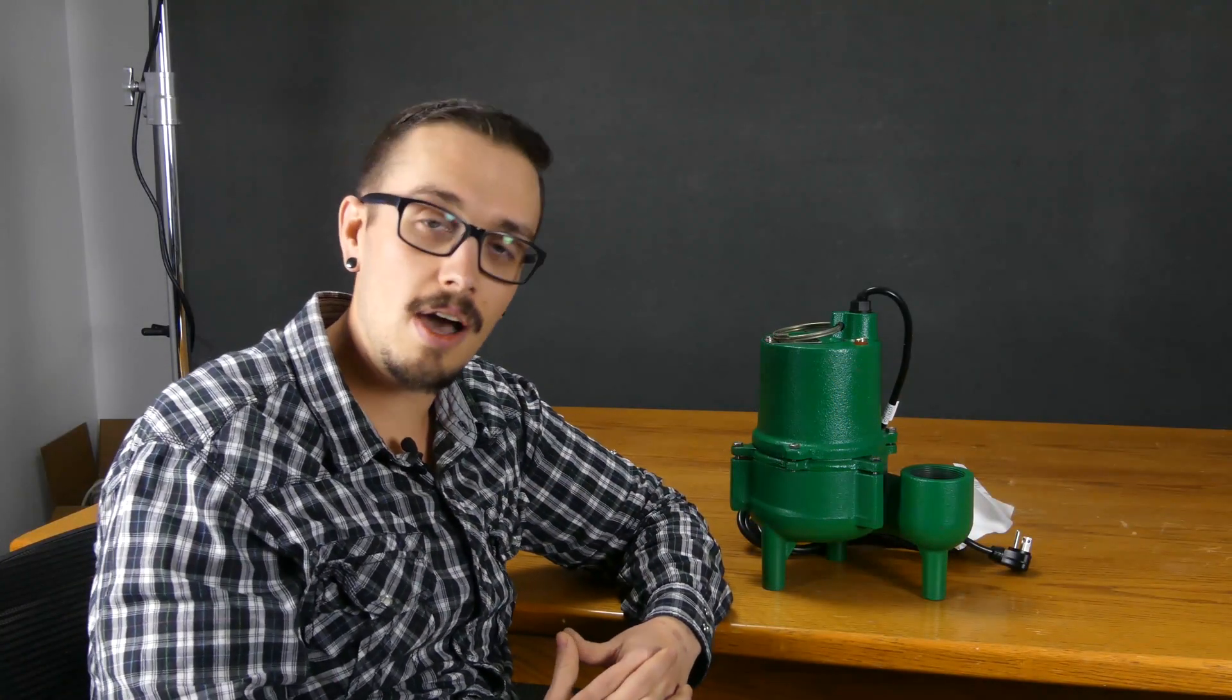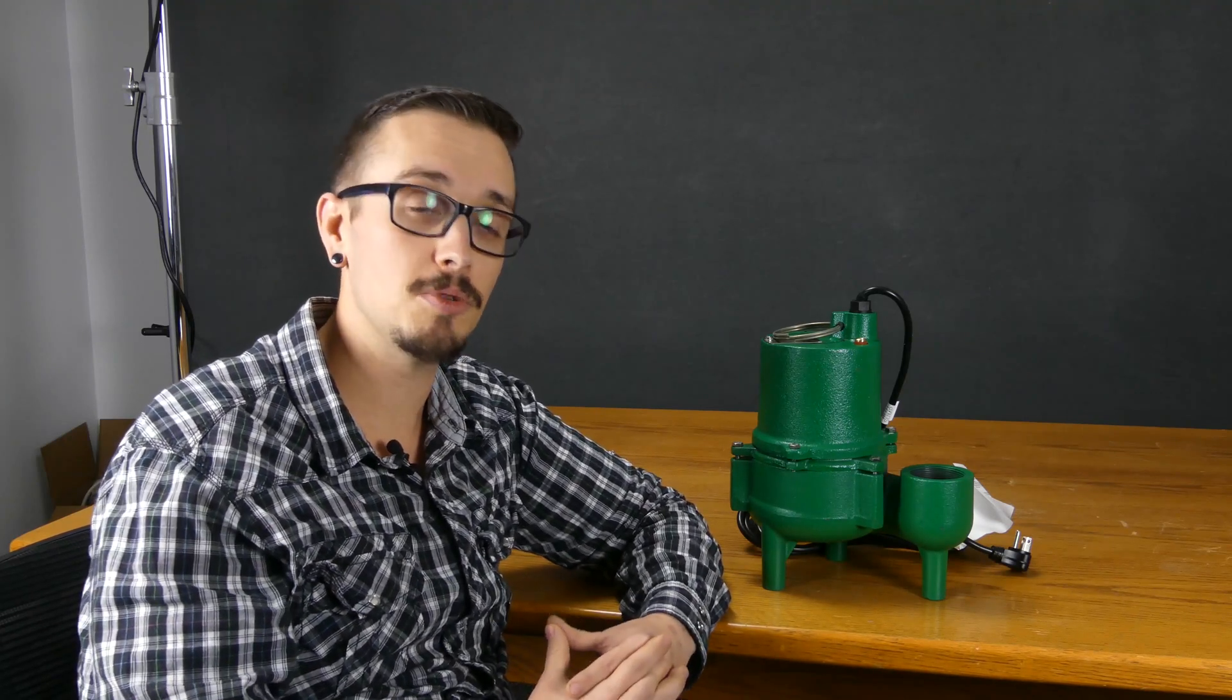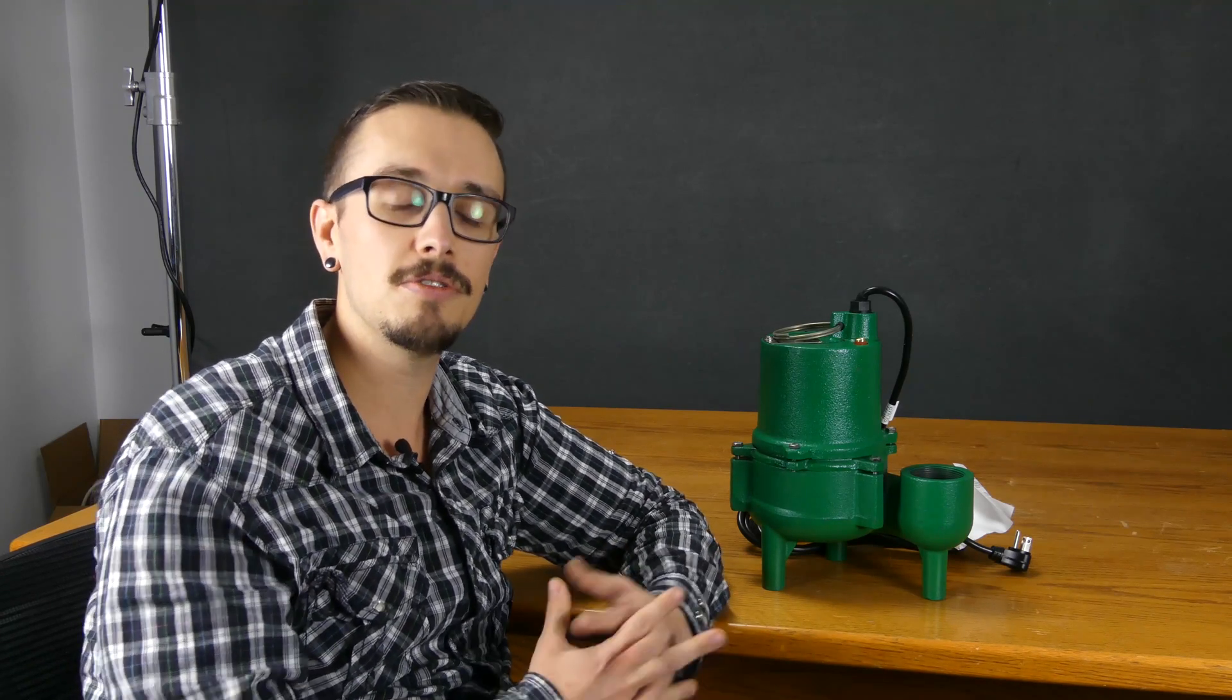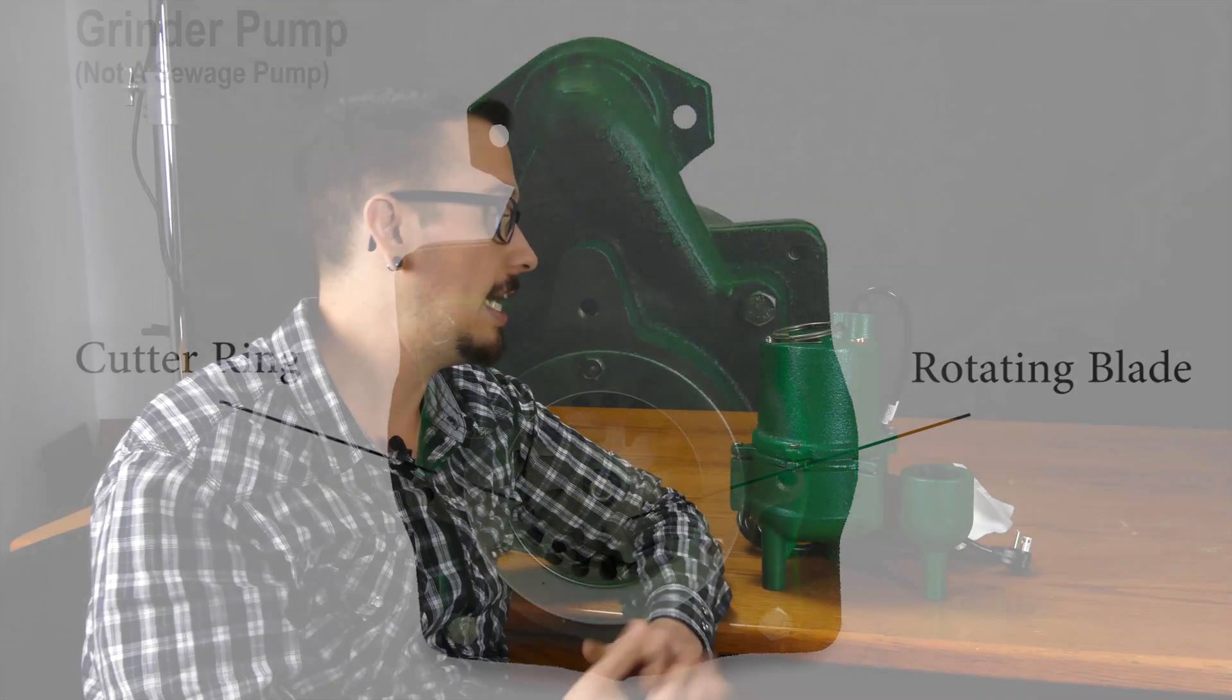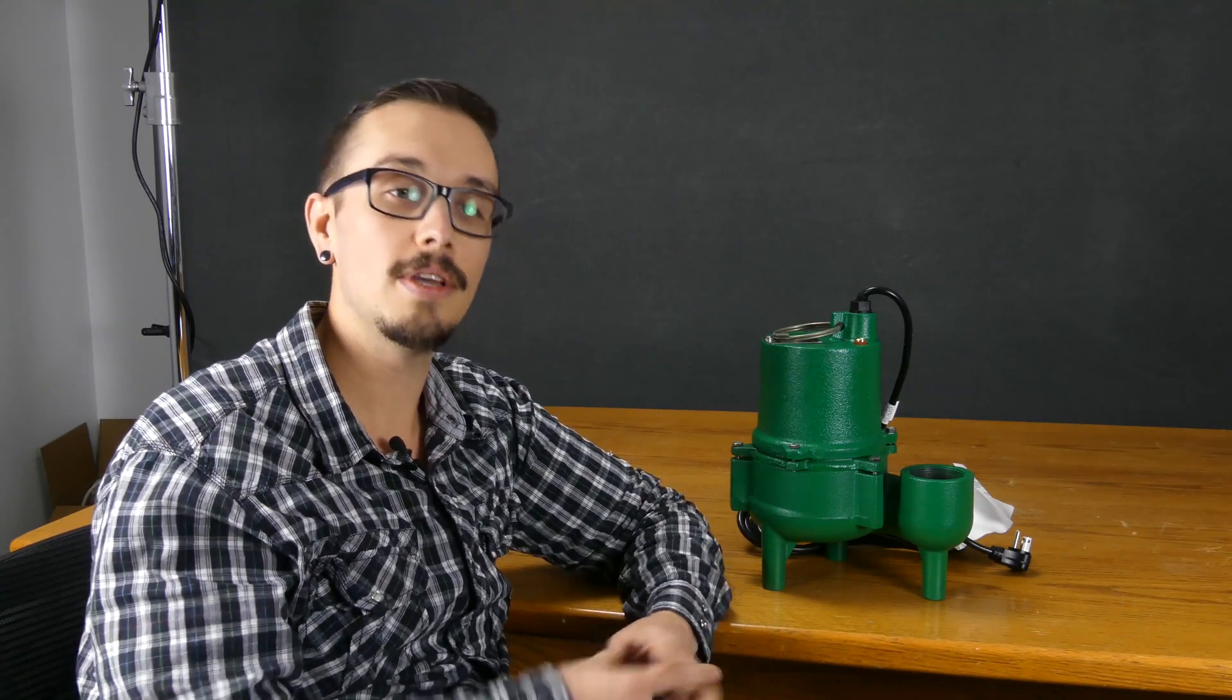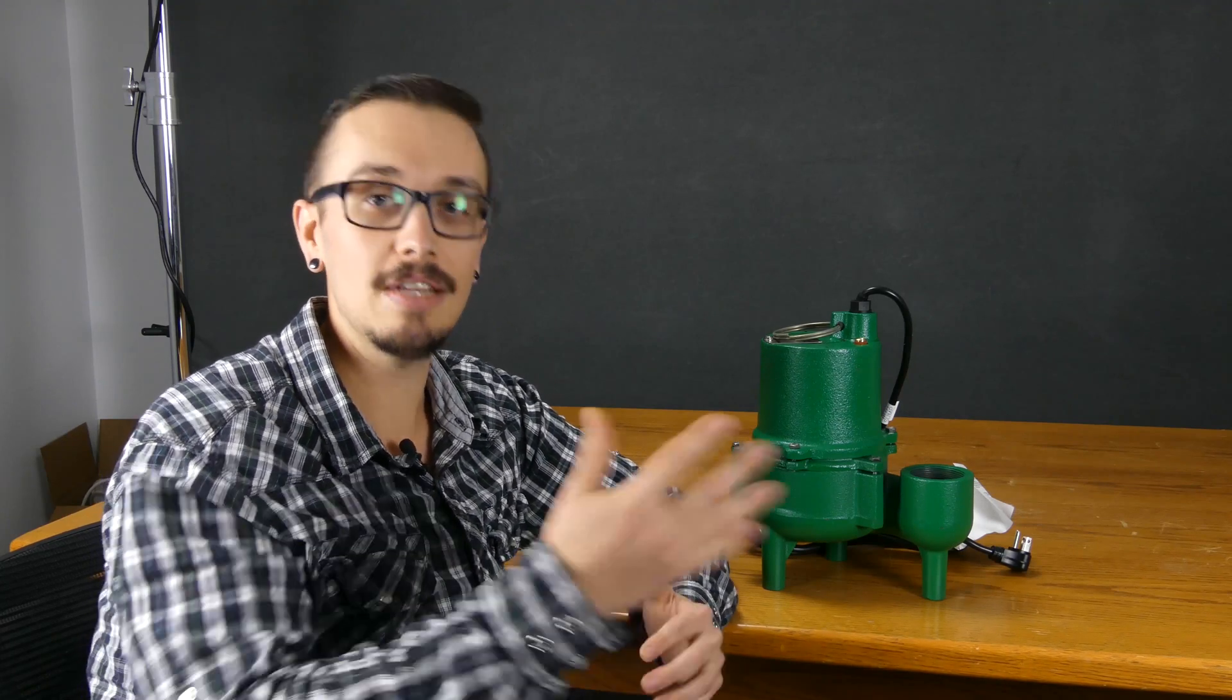One thing that a sewage pump is not is a grinder pump. Oftentimes I get calls from someone looking for a grinder pump while describing features that a sewage pump has. Make sure you can make that distinction. A grinder pump is intended to chop, slice, and dice the solids into a macerated slurry, whereas a sewage pump passes the solids whole to a septic system. You never want to use a grinder pump when pumping into a septic system.